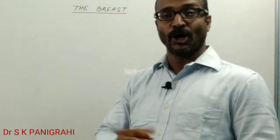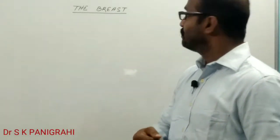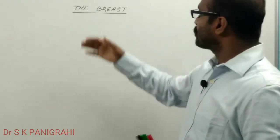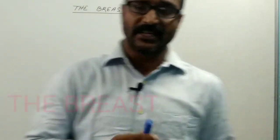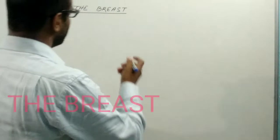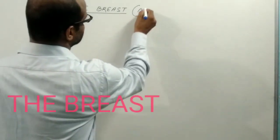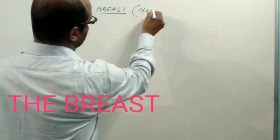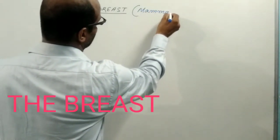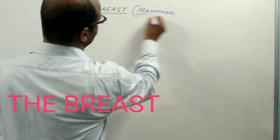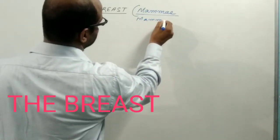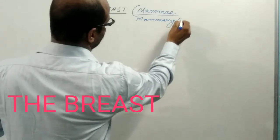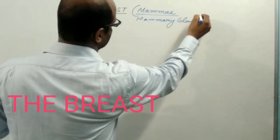Welcome to my another session. In this session, I have a talk about another type of female reproductive accessory gland. This is the breast, which is also known as mammae. This gland is also known as the mammary gland.